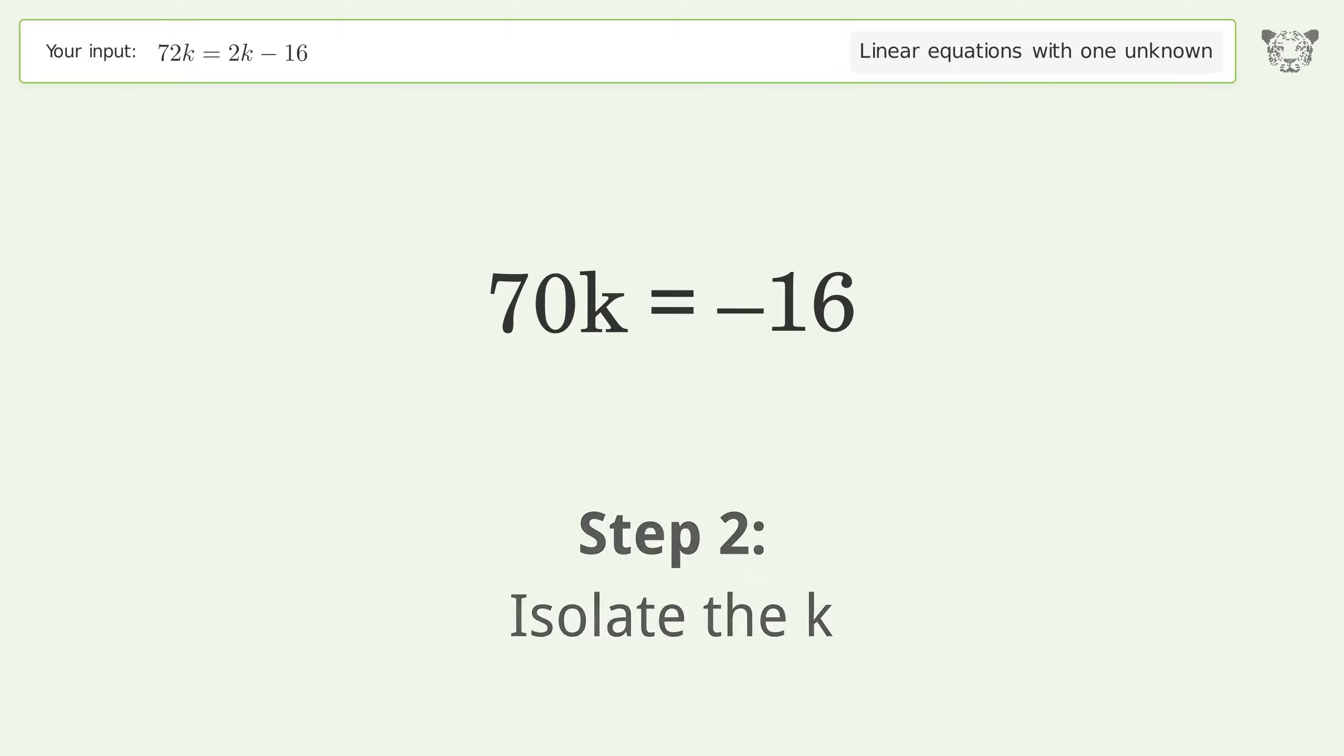Isolate the k. Divide both sides by 70. Simplify the fraction.